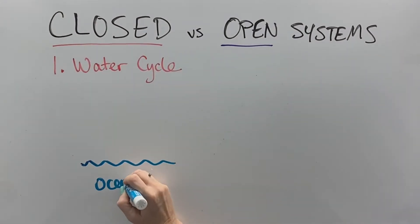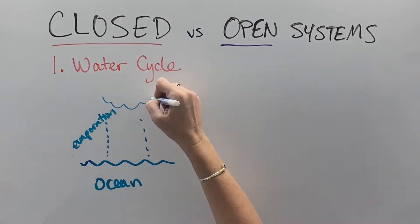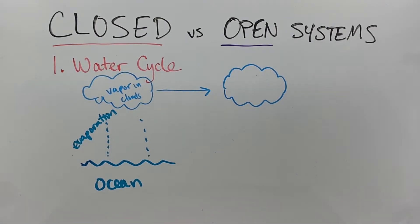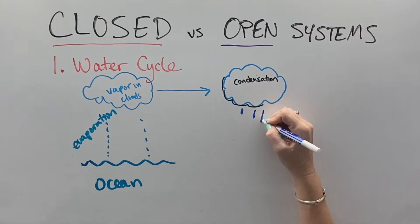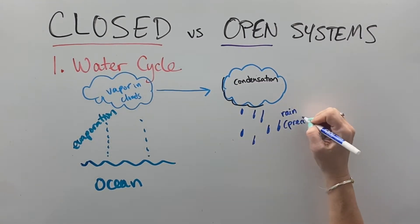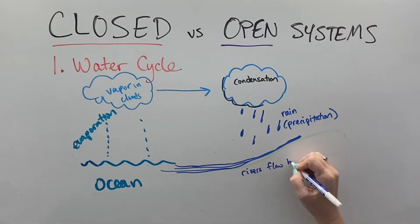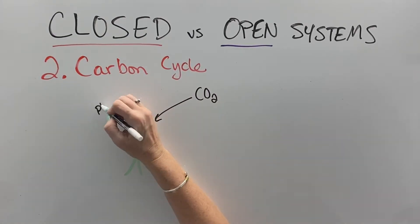The first example of a closed system is the water cycle. You can start anywhere in the water cycle, but I'm going to start in the ocean. Water in the ocean evaporates up into the clouds and turns into gas or vapor. Then it cruises over towards the land and the clouds condense and cool into precipitation in the form of rain, or it could be snow or hail, comes down onto the ground, eventually turns into rivers that flow back into the ocean. We have no water coming in or out of the planet. It just cycles over and over.